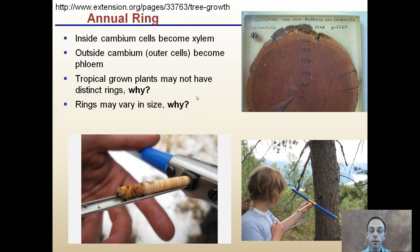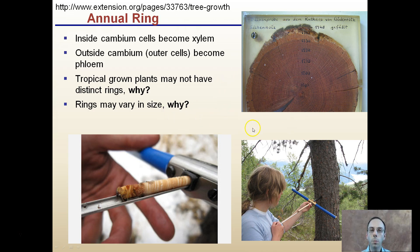We don't have to cut down the tree to get an assessment of tree rings — we can take a core of a tree, as shown here, and simply pull out a core. Inside the cambium becomes xylem; the outside cambium and outer cells become phloem. Tropical plants, though, may not have distinctive rings. Rings may also vary in size. Remember that in the northeast, trees tend to grow slower in the fall and winter and faster in the spring and summer, whereas tropical plants grow more consistently, indicating they may not develop these rings.